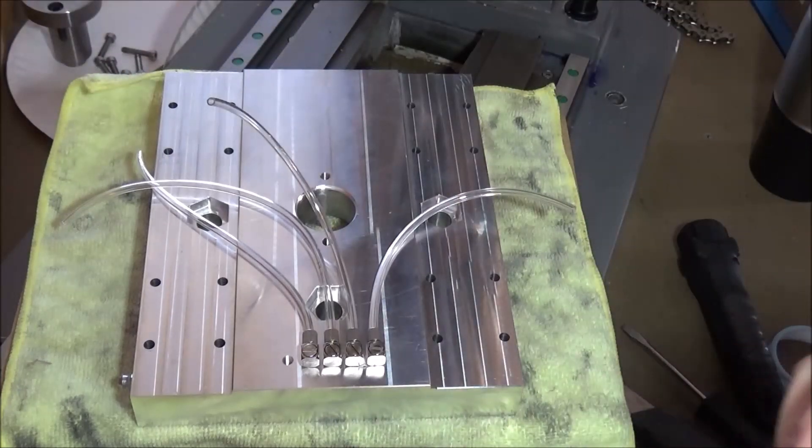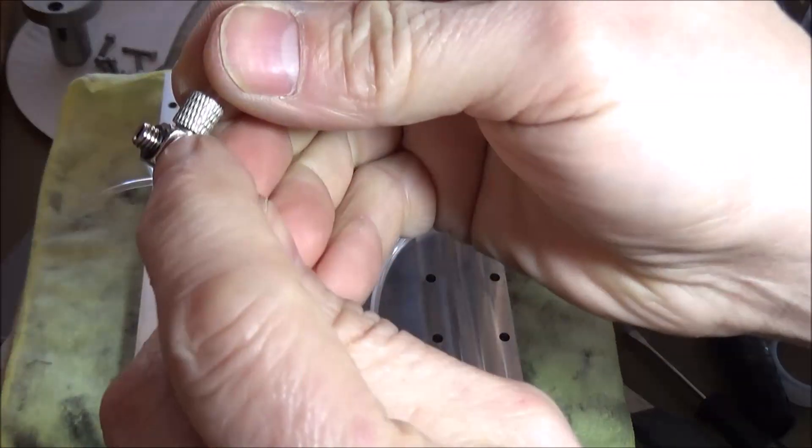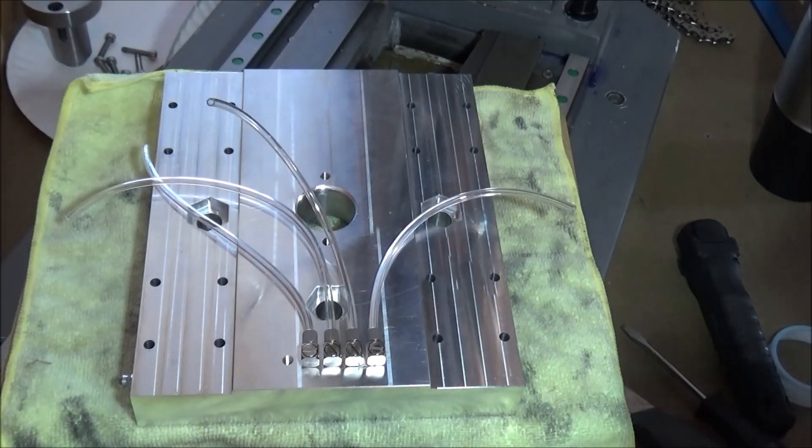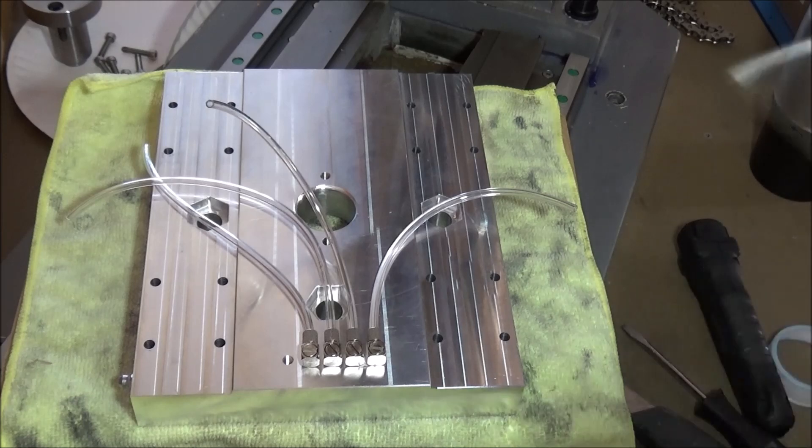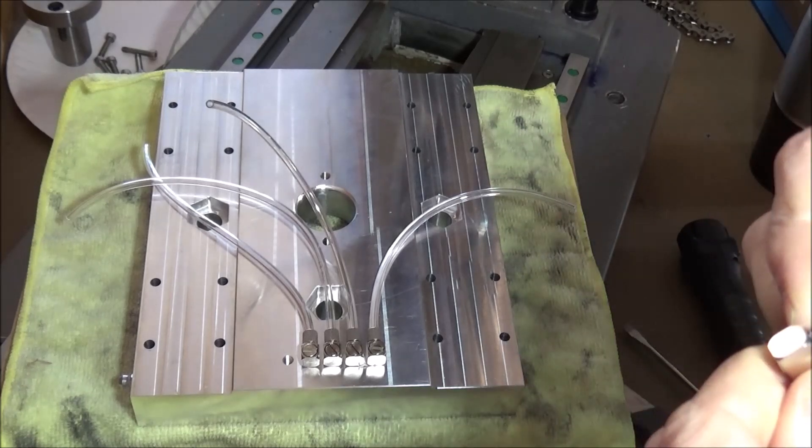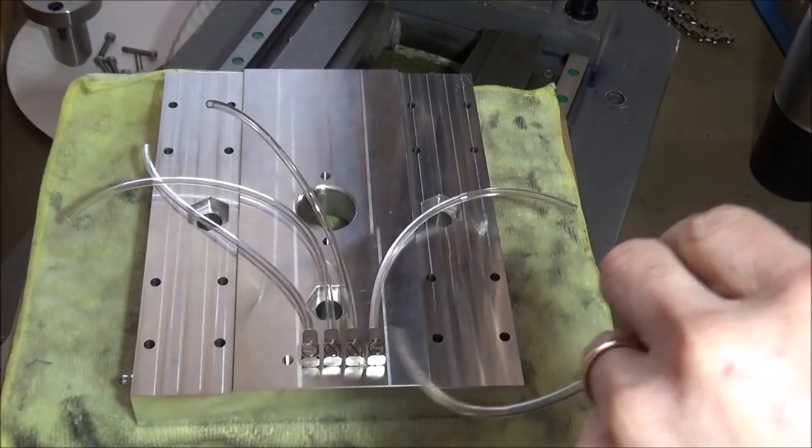They have these little O-rings here on the bottom, but you can take and wrap some Teflon tape on here, which is what I'm doing, just for a little extra added bonus. Just to get a little bit of Teflon on there.